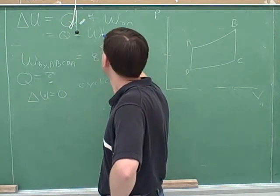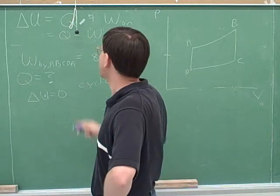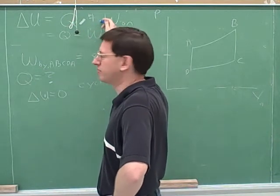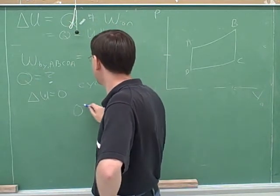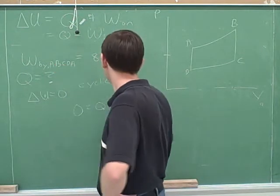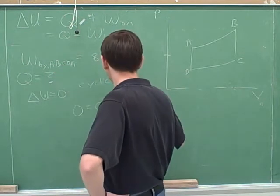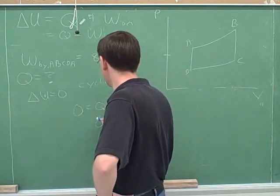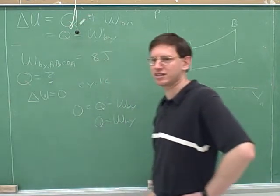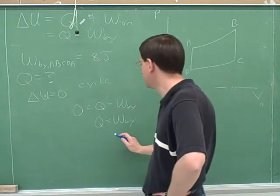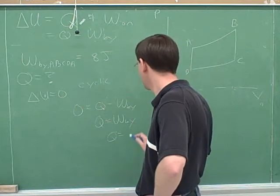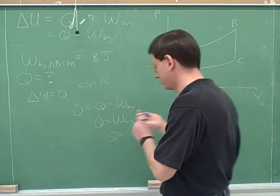We should use this equation so that zero equals Q minus the work done by the gas. Since we're focusing on the work done by the gas, we use: 0 = Q - W_by. And that gives us Q = 8 joules. That was the correct answer.